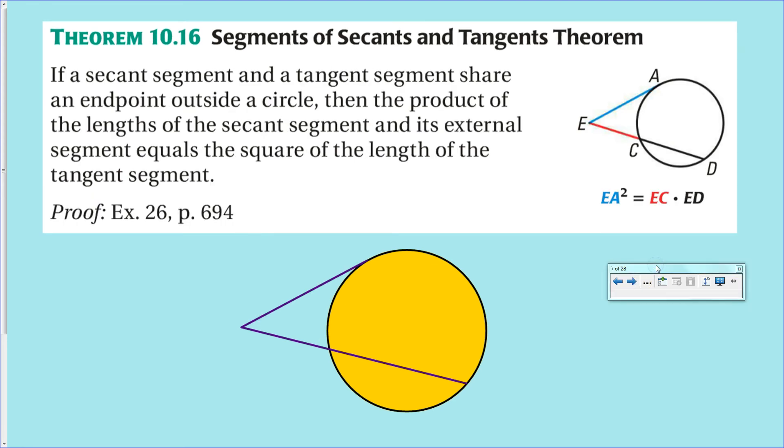Next, theorem 10.16. This time, we have a tangent line. And the tangent line is kind of odd because we don't have a second portion of the segment over here. So, it kind of follows that you should just multiply it by itself.